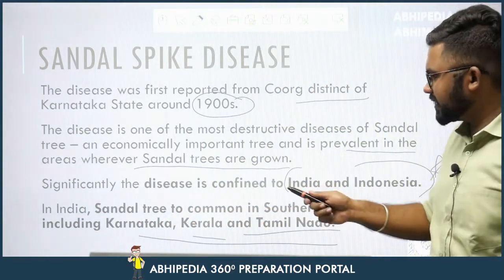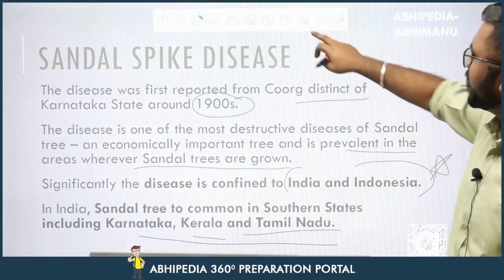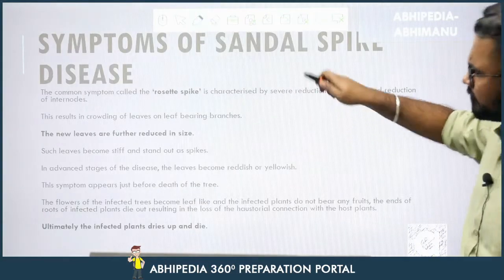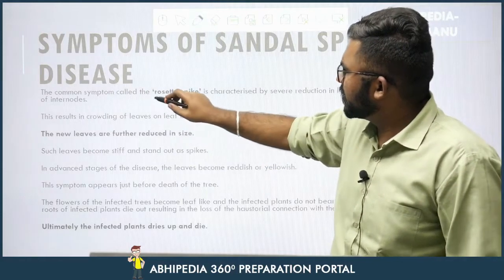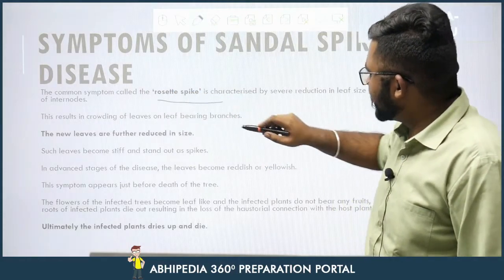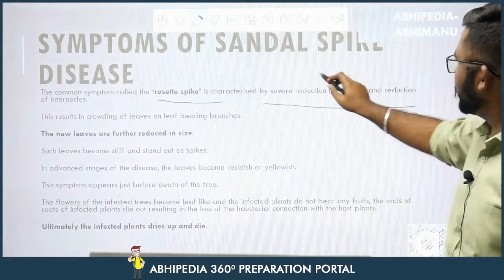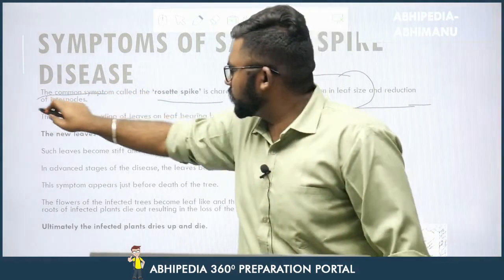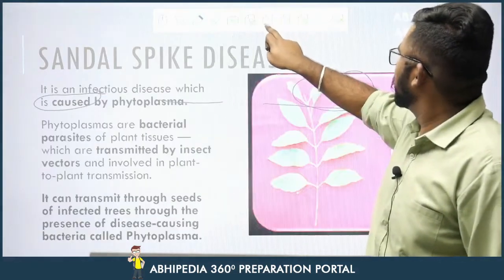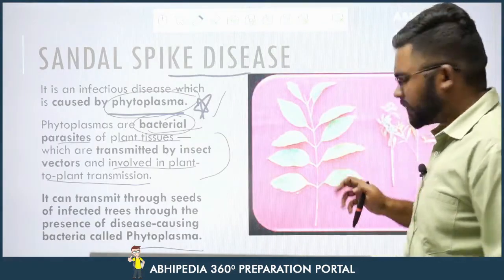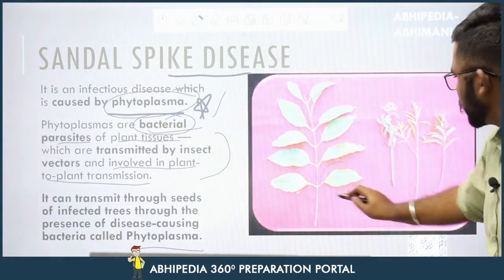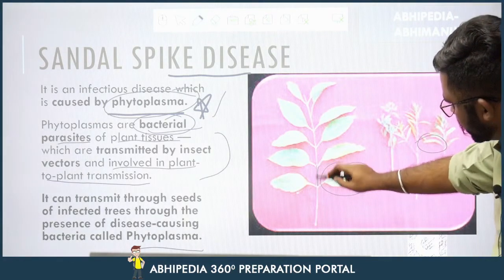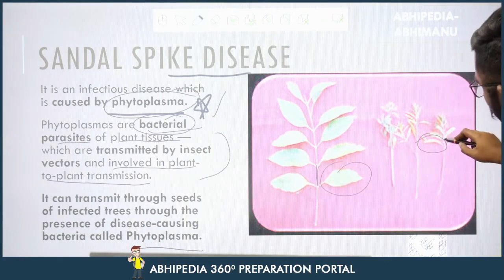Let's look at the symptoms briefly. Spikes appear on the tree — first there is a reduction in leaf size and reduction of internodes. As seen in the starting photograph, the size of the leaves becomes smaller and the distance between nodes also decreases.